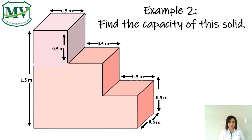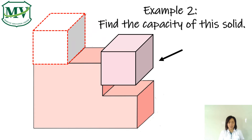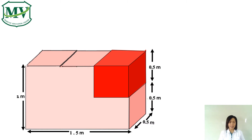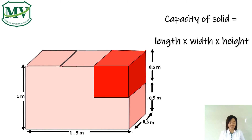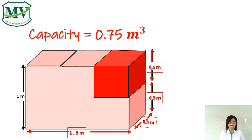Example number 2: let's find the capacity of this solid. Look at the figure and its measurements. To find the capacity, you can move some parts of the figure in different ways. This part of the figure is a cube, and the length of the cube is equal to this part. We can move this cube to form a cuboid — it is easier to find the capacity this way. We calculate the capacity of the cuboid using: capacity equals length times width times height. So, 1.5 meters times 0.5 meters times 1 meter equals 0.75 cubic meters. Therefore, the capacity of this solid is 0.75 cubic meters.